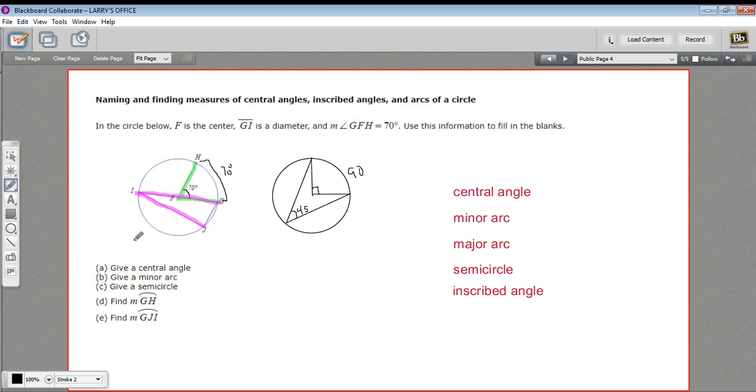But the bigger of the two would be the major arc. The smaller of the two would be a minor arc. And then finally, a semicircle is just half of a circle. But the trick is that if you find a diameter, here's a diameter from G to I, what that means is that it cuts the circle exactly in half. So there'll be 180 degrees of arc over here and 180 degrees of arc over here.